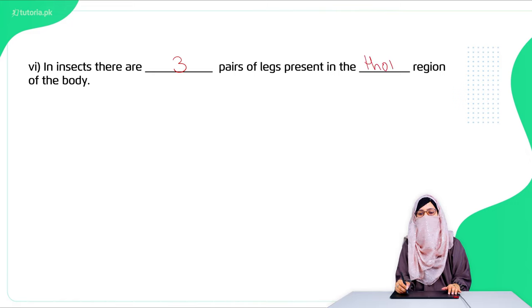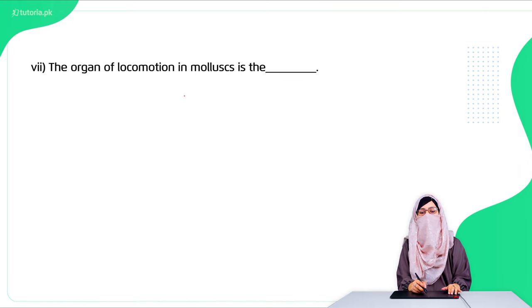Seventh: the organ of locomotion in mollusks is foot, which is muscular in nature.